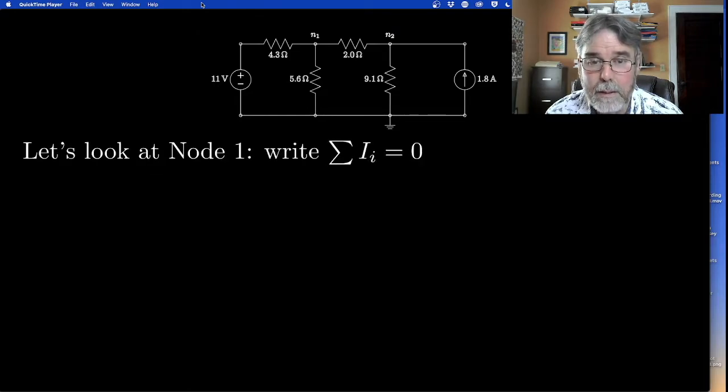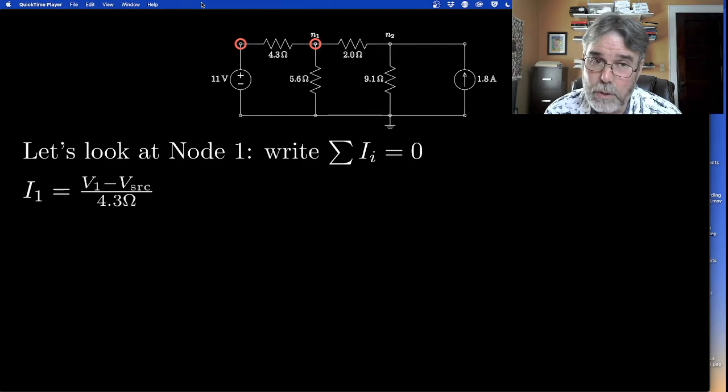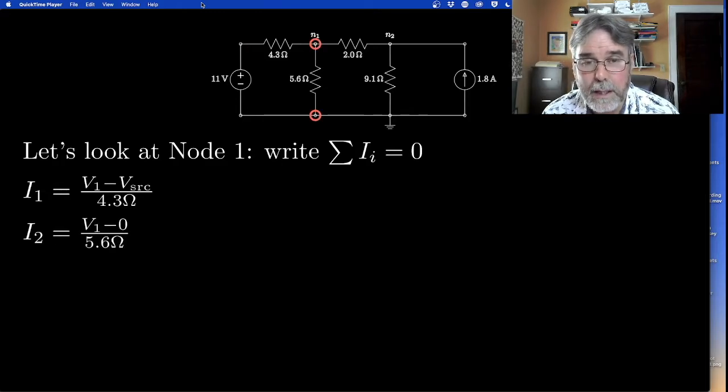Let's focus on node one and write Kirchhoff's current law for node one. Kirchhoff's current law says the sum of the currents have to add up to zero. So we're going to think about the current leaving each of those nodes. First, the current leaving the node through the 4.3 ohm resistor is going to be the voltage at node one, which I'm going to call V1, minus the voltage at the source node, divided by 4.3 ohms. That's just applying Ohm's law to that branch. Then the next branch connects node one to ground through a 5.6 ohm resistor. It's going to be the voltage at node one minus the voltage at the ground, which is just zero, divided by the resistance of that branch, 5.6 ohms.